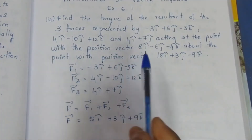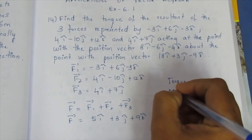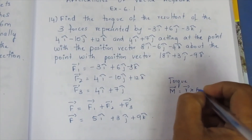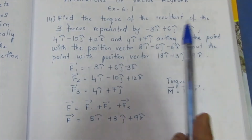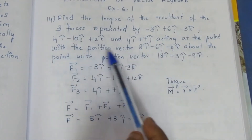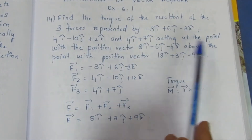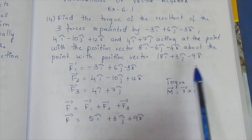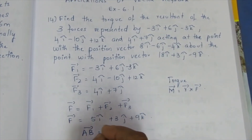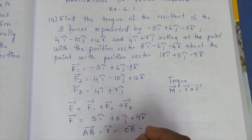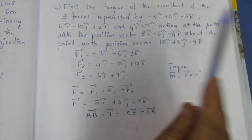Now we will find r-vector using the formula. Torque: M-vector is equal to r-vector cross F-vector. The force is acting on the point with position vector 8i-cap minus 6j-cap minus 4k-cap, about the point with position vector 16i-cap plus 13j-cap minus 9k-cap. We will find r as the AB-vector, which is OB-vector minus OA-vector.